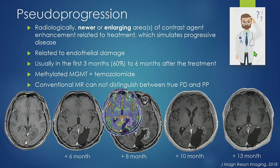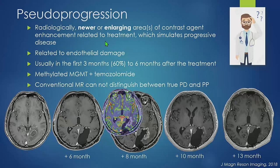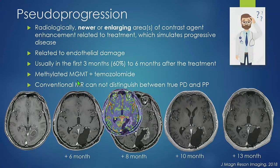Let's talk about pseudoprogression. It is radiologically defined as a new or enlarging area of contrast-enhancing enhancement related to treatment, which simulates progressive disease. It is believed to be related to endothelial damage. It is usually seen in the first three months, although it can be seen at six months and even further after initial therapy. It is far more common in combination with temozolomide chemotherapy and methylated MGMT tumors. Conventional MRI cannot distinguish between truly progressive disease and pseudoprogression.